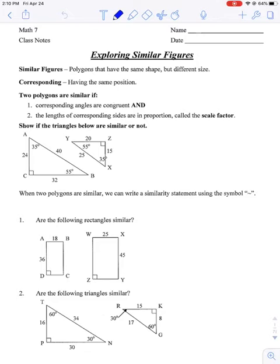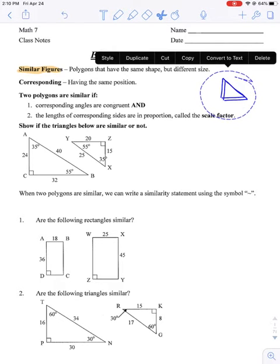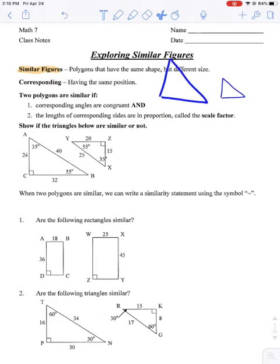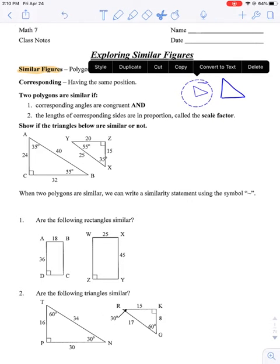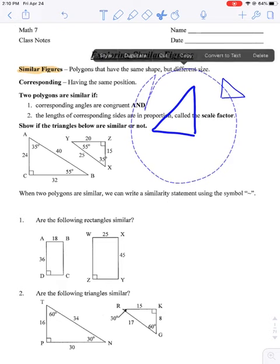The first thing we need to do is talk about what a similar figure is, and the definition is up here at the top of the page. Similar figures are polygons — meaning shapes — that have the same shape, but they might be a different size. You're basically imagining any shape in the world, taking your scissors tool to duplicate it, and then if you stretch it or shrink it, they will have the same shape but they'll be different sizes.